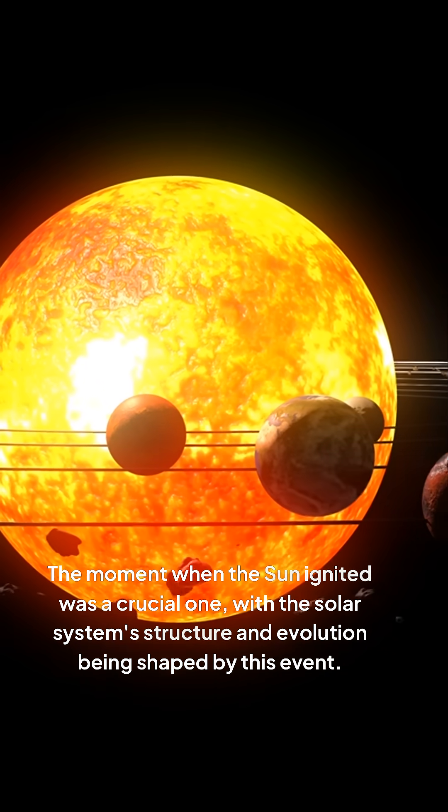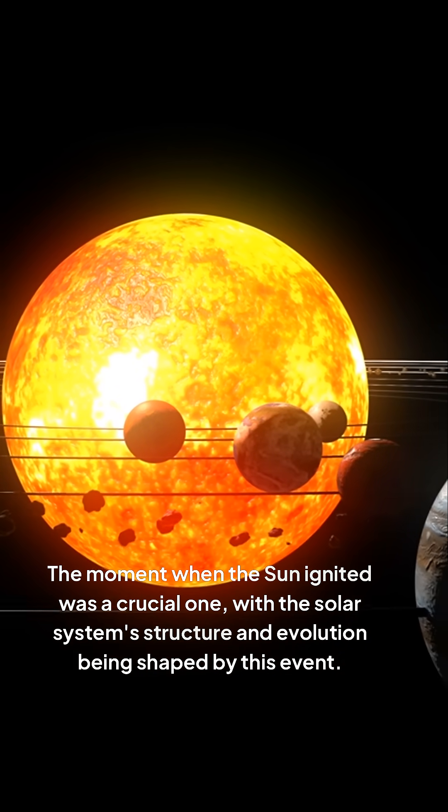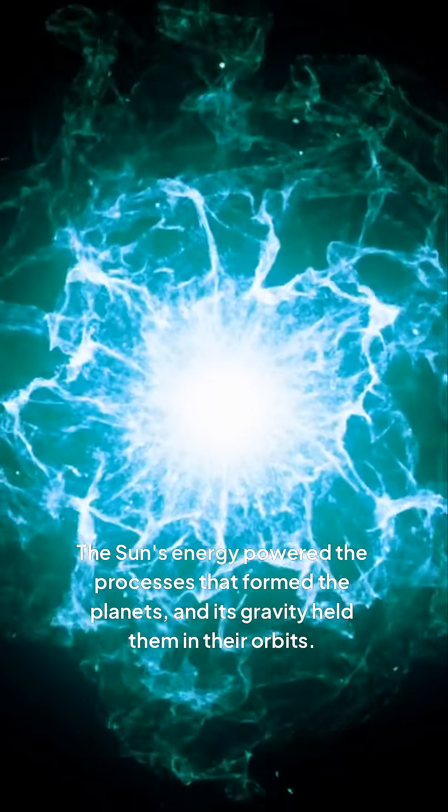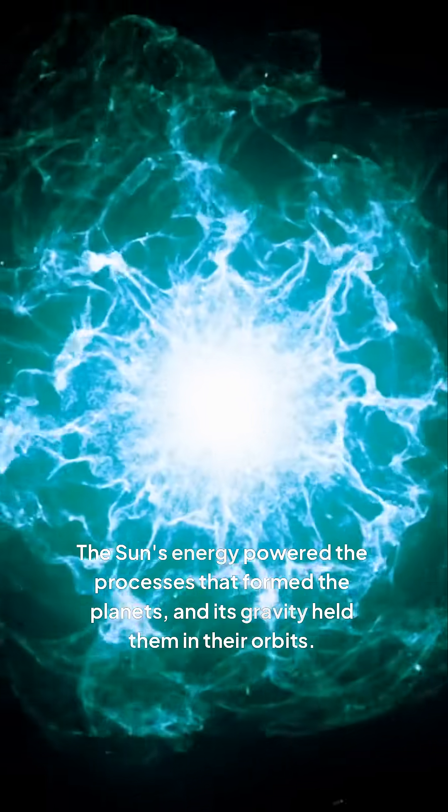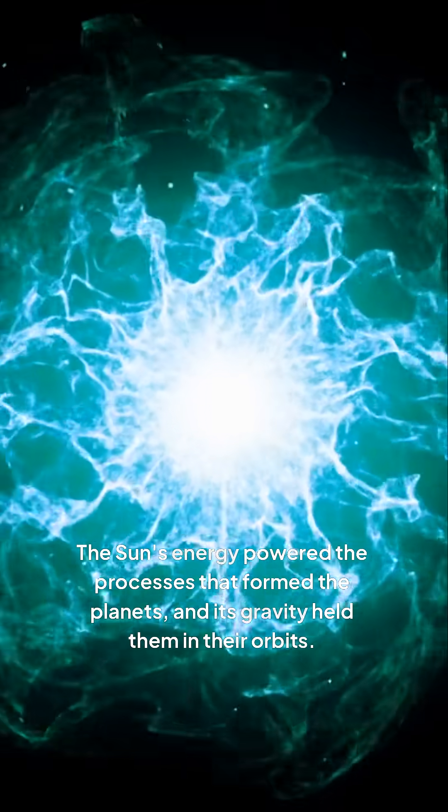The moment when the sun ignited was a crucial one, with the solar system's structure and evolution being shaped by this event. The sun's energy powered the processes that formed the planets, and its gravity held them in their orbits.